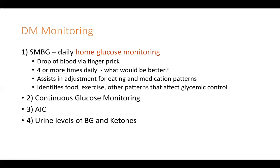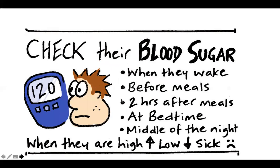Two hours after meals — post-prandial — you want your blood sugar to be less than 180 mg/dL. So check when waking up, before meals, two hours after meals, at bedtime, middle of the night, and when blood sugar is high, low, or when sick.